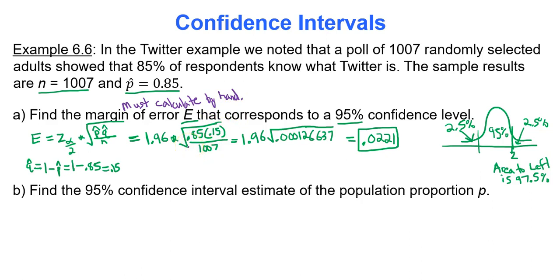Find the 95% confidence interval estimate of the population proportion p. We're going to take p-hat and add and subtract the error from it. You have p-hat minus E. Your sample proportion is 0.85 and you're going to subtract 0.0221. When you subtract those two values you'll get 0.8279. Then you take your sample proportion and add the error to it. 0.85 plus 0.0221, and that's going to give you 0.8721.